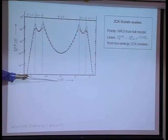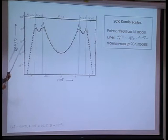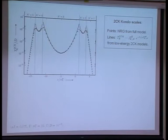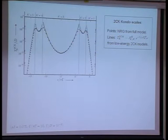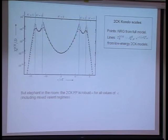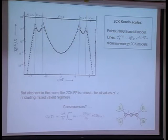So you can look at the two-channel Kondo scales as a function of level energy epsilon. Here are the various Coulomb blockade values 1, 2, 3, 4, and 5. The points show NRG calculations from the full model, and the lines show the asymptotic effective two-channel Kondo scales. The agreement is always excellent, except near the mixed-valence regimes where Schrieffer-Wolff isn't valid. Throughout, for all values of epsilon, the two-channel Kondo fixed point is robust — there is no indication of anything other than a stable two-channel Kondo fixed point, including in the mixed-valence regimes.